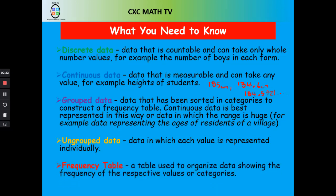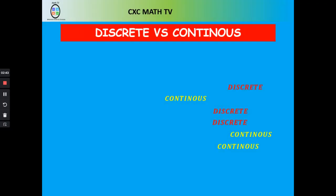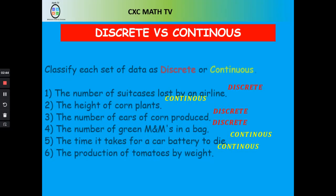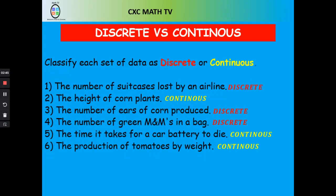A frequency table is the table we use to organize our data, showing the frequencies for the respective values and categories. Here are some questions to review discrete and continuous data, with the answers already laid out.